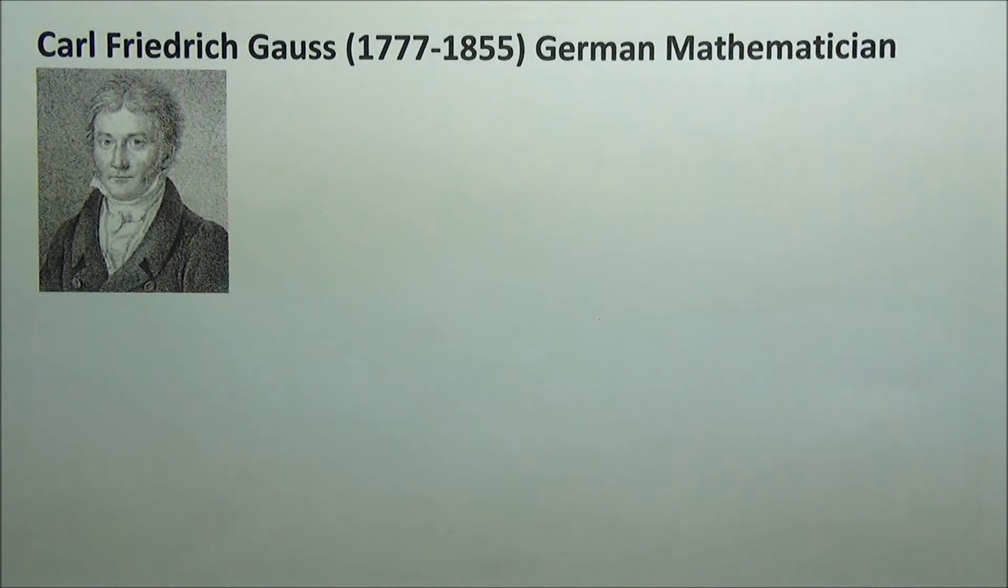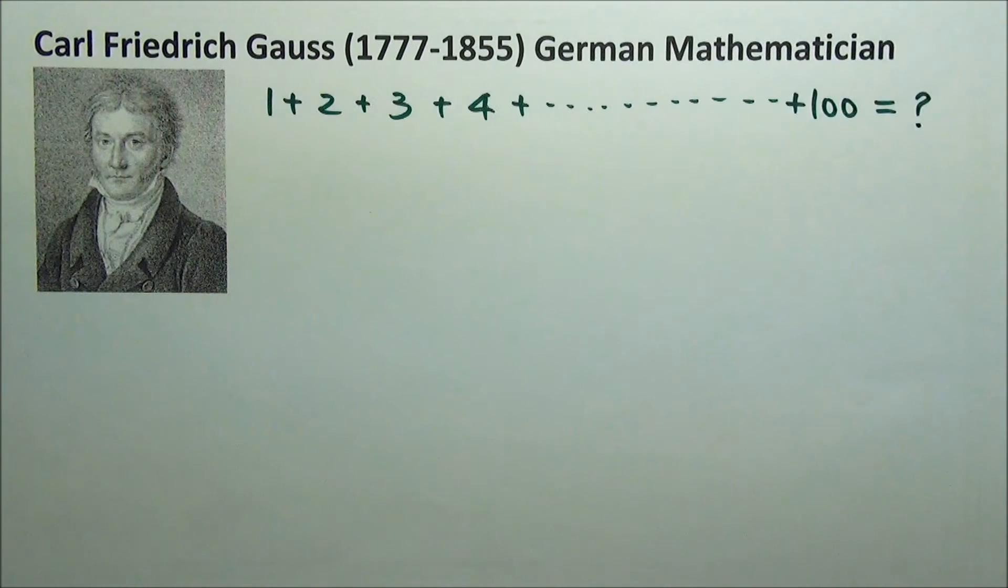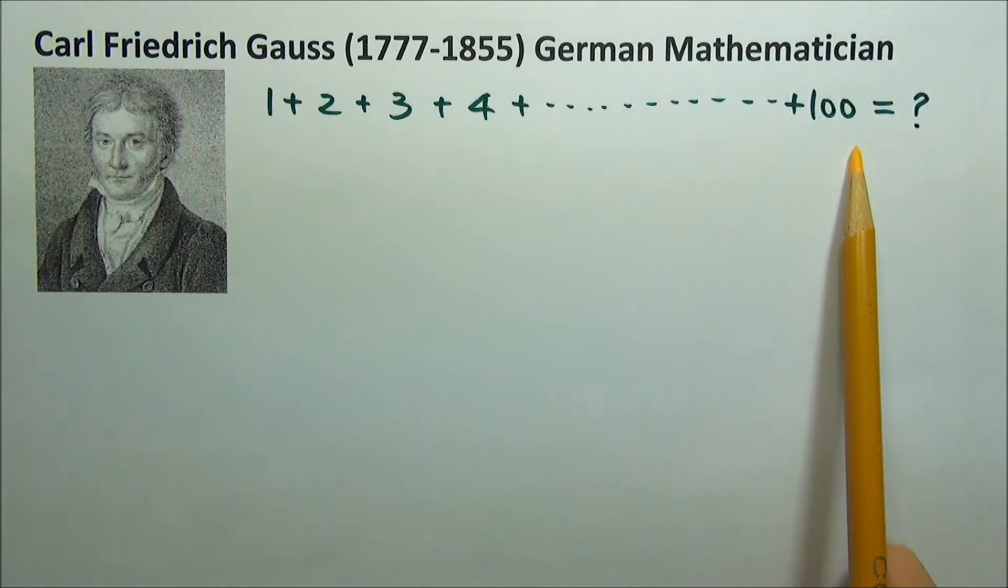Carl Friedrich Gauss was a great German mathematician, and here's a story that happened when Gauss was a little kid. One day, his teacher gave him a task to add up all the whole numbers from 1 to 100.